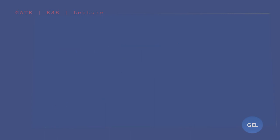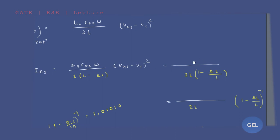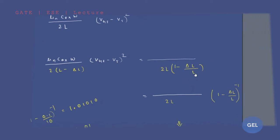In the saturation region, substituting L minus ΔL in place of L, we factor L out from the denominator: 2(L − ΔL) becomes 2L · (1 − ΔL/L). So the term (1 − ΔL/L) appears in the denominator, which can be written as (1 − ΔL/L) to the power of minus one in the numerator.